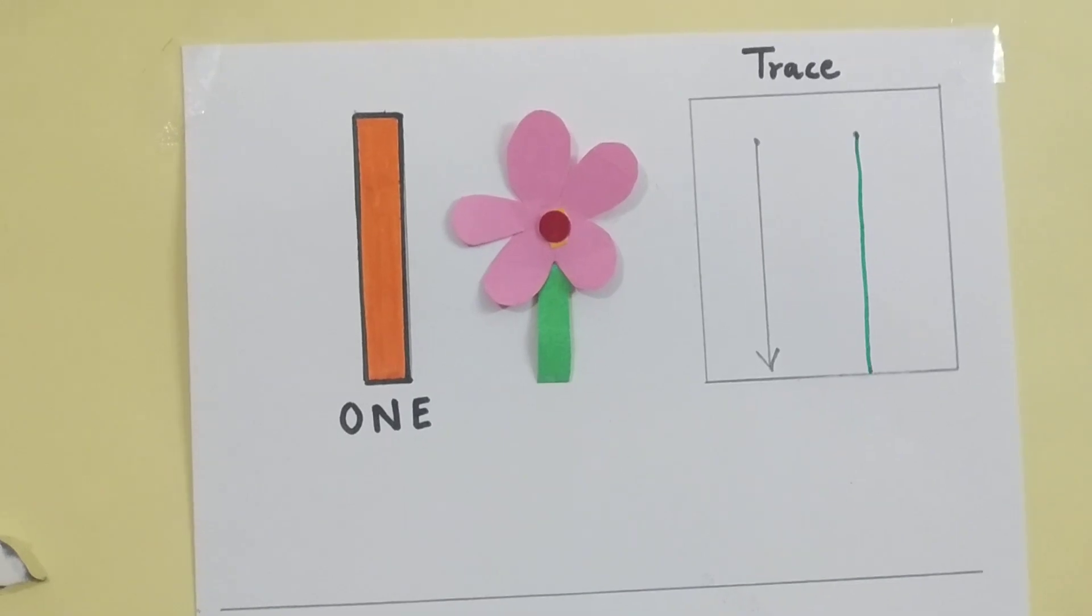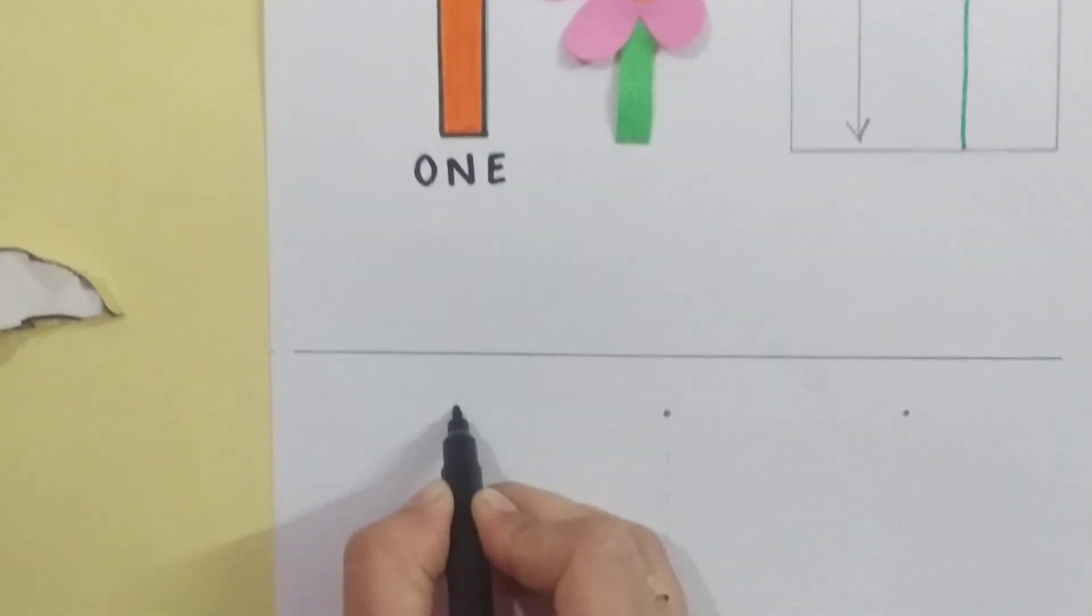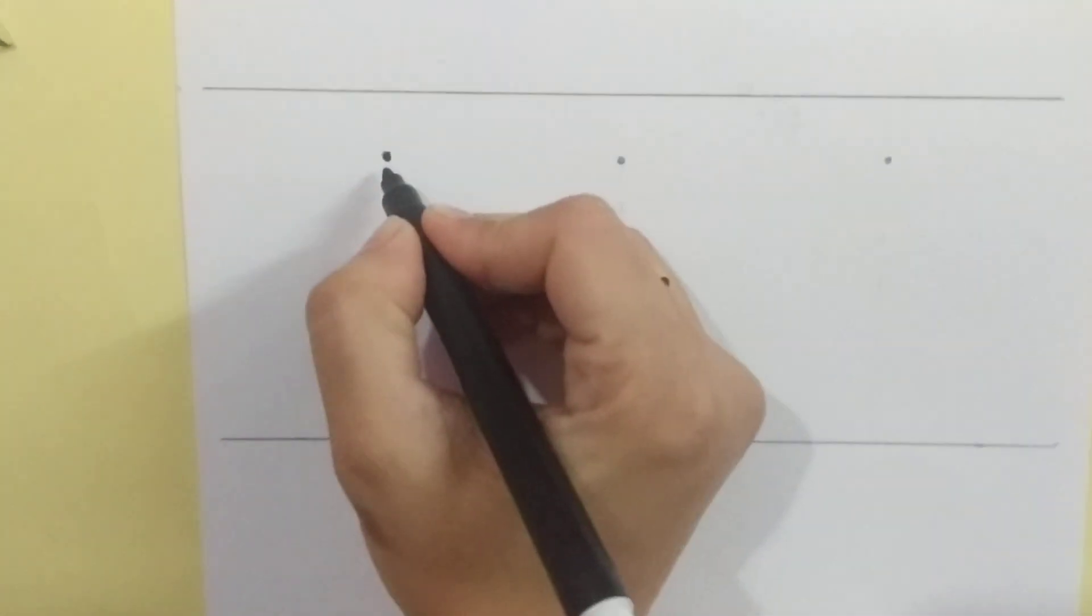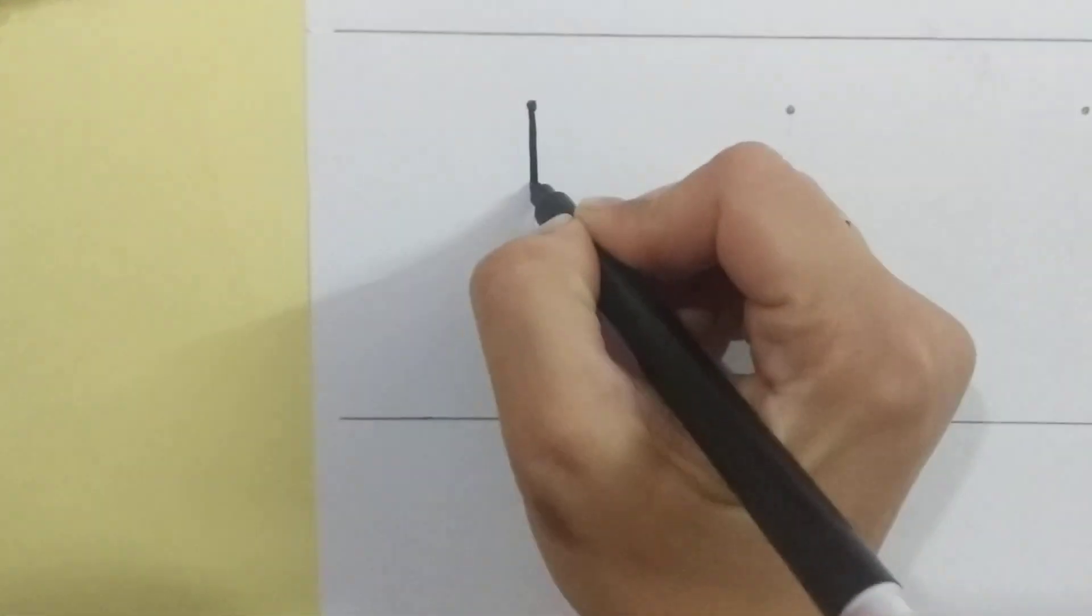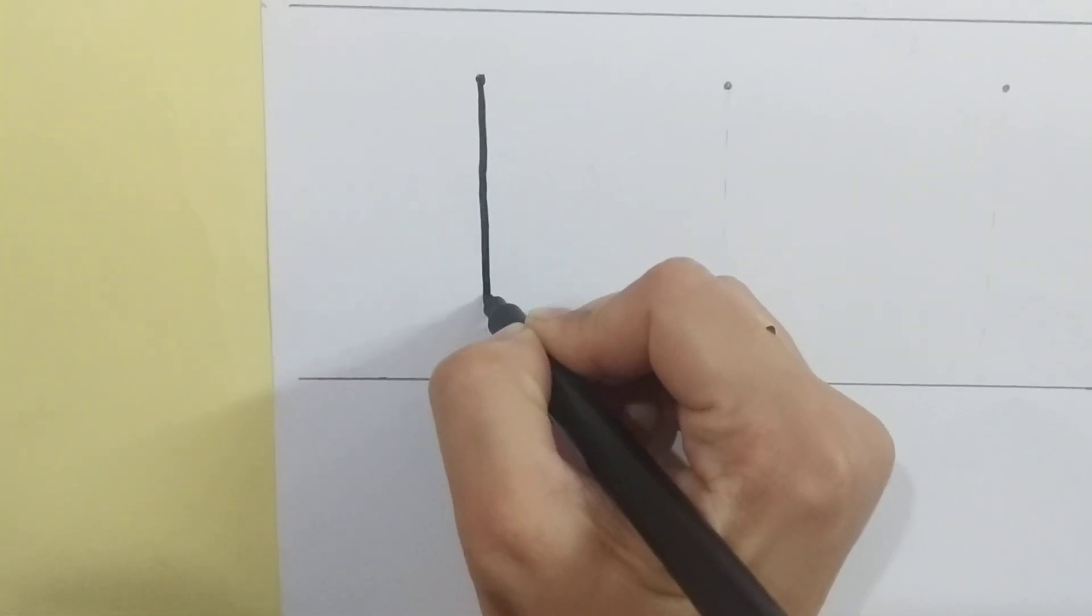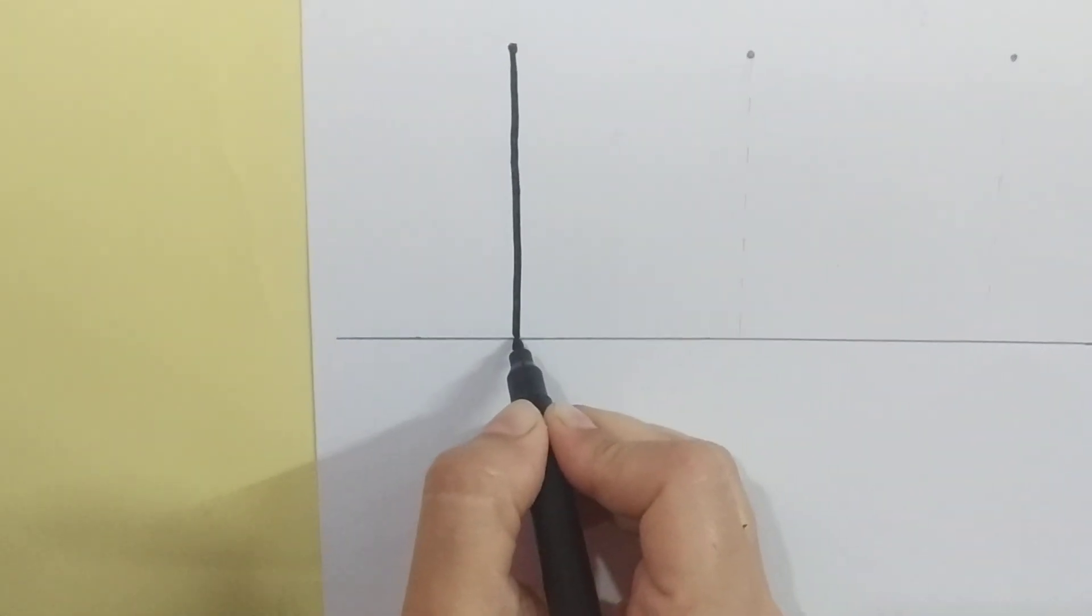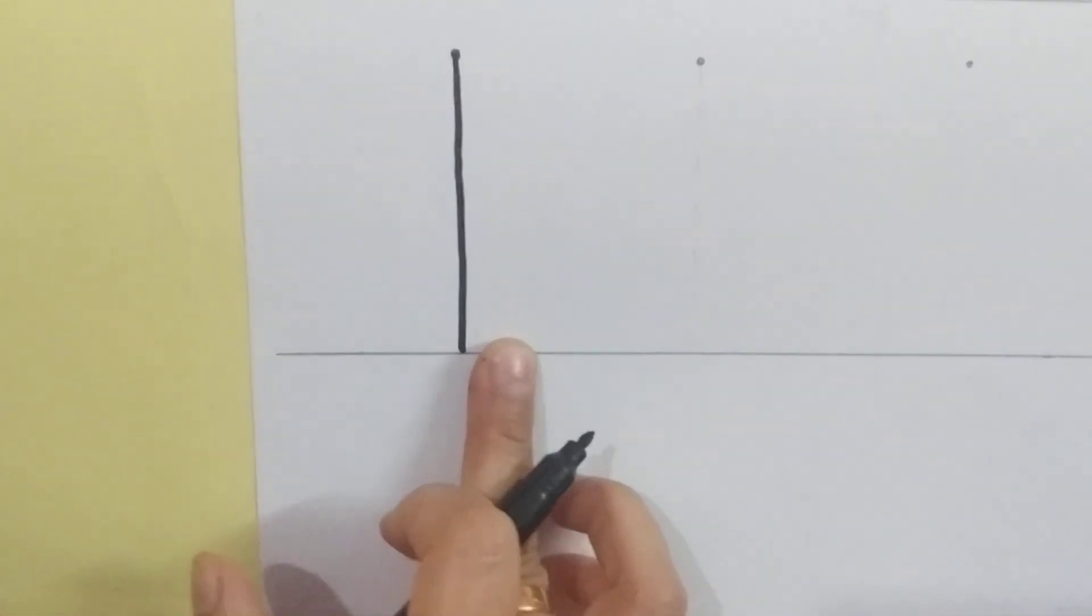I will take another pen. See, this is a dot. I will make a standing line starting from top. Slowly go down, go down, go down and stop. Touch this bottom line. Now, it is 1.